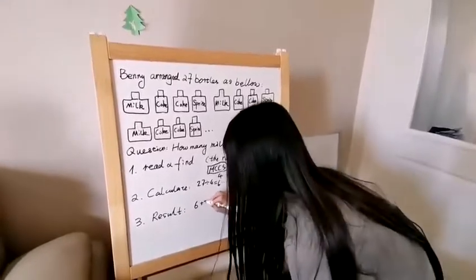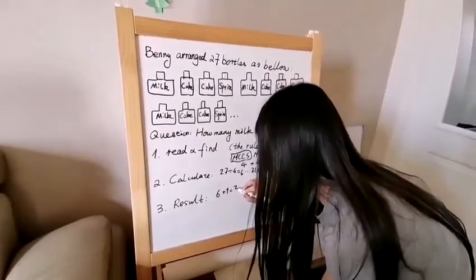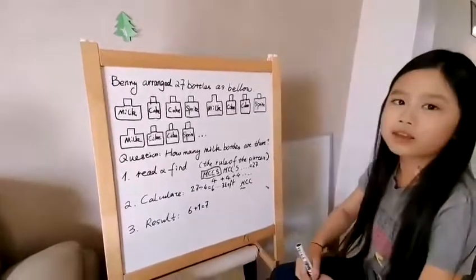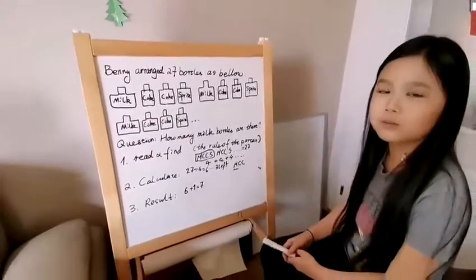Finally, 6 plus 1 equals 7 milk bottles. We have 7 milk bottles in total.